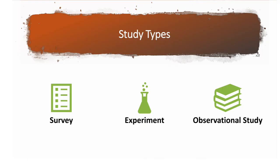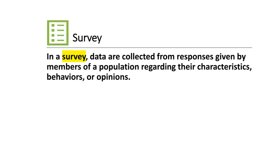There are three study types we're going to look at. The first one is a survey, then an experiment, and then last, an observational study. In a survey, data are collected from responses given by members of a population regarding their characteristics, behaviors, or opinions. Basically, you don't affect anything — you just collect data through some type of survey, like on Facebook, Google Forms, or through your phone.